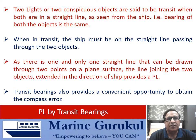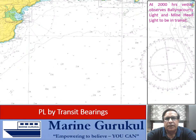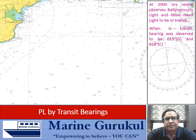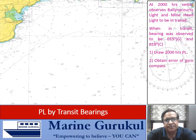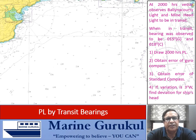Example: At 2000 hours a vessel observes Ballycotton light and Mine Head light to be in transit. When in transit, the bearing was observed as 015° gyro and 018° compass. Required: draw the 2000 hours PL; find the error of the gyro compass; find the compass error; and if variation is 3° west, find the deviation for the ship's head.